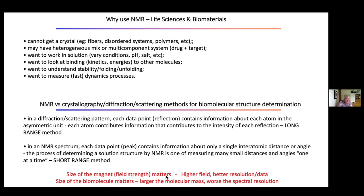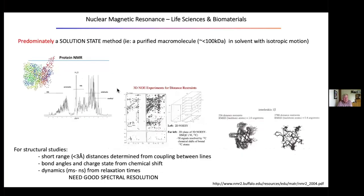The size of the magnet matters — higher field gives better resolution and better data. We've now reached something like 1.2 tesla, but pushing field strength is technically very difficult in terms of the engineering of superconducting magnets. The size of the biomolecule also matters: the larger the molecular mass, usually the worse the spectral resolution. This is actually where deuterium comes in and helps.